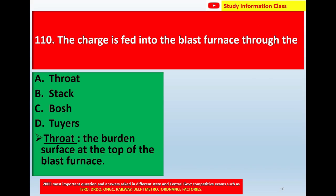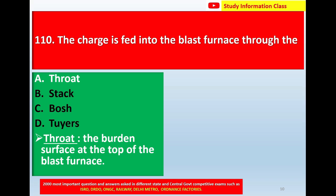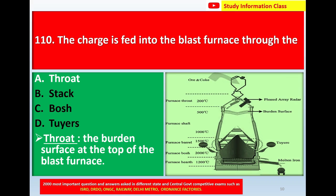Question number 110: The charge is fed into the blast furnace through the — option A: throat, option B: stack, option C: bosh, option D: tuyeres. Correct answer is option A — throat. The throat is the burden surface at the top of the blast furnace. So for question number 110, the charge is fed into the blast furnace through the throat.